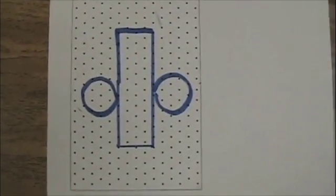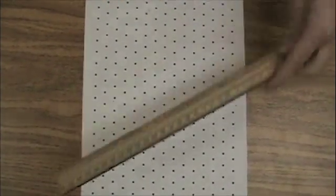Next we are going to make a net for a cylinder. The first step is to make a rectangle, 3 dots by 12 dots.